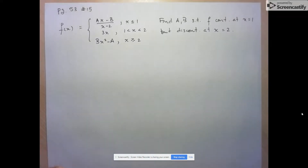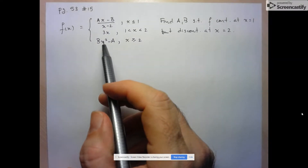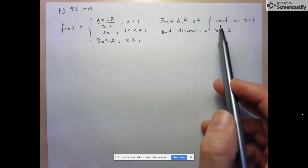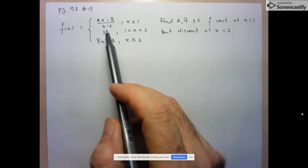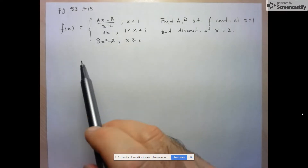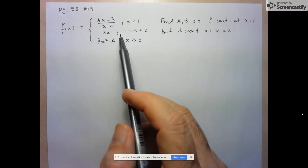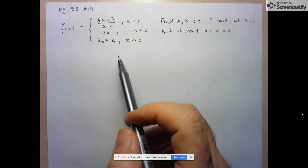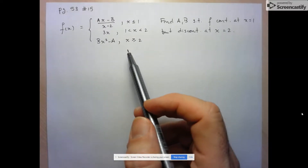We're going to take a look at number 15 from page 53. They give us this piecewise function and they want us to find the unknowns A and B such that F is continuous at X equals 1. We can see that's one of the places where the equation changes, but it needs to be discontinuous at X equals 2, the other place where the function changes equation.